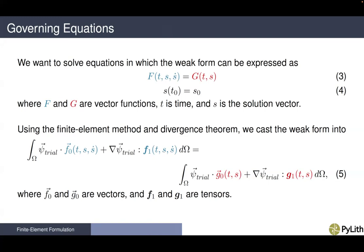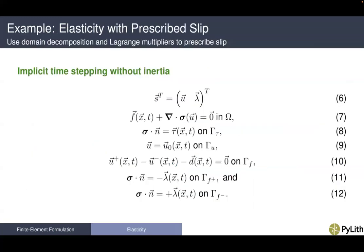Using the finite element method in the divergence form, we cast the weak form into what is shown, where F0 and G0 are vectors and F1 and G1 are tensors. Let's see how this looks for elasticity with prescribed slip, where we're going to use implicit time stepping without inertia. Our solution field has the displacement as well as the Lagrange multiplier corresponding to the change in tractions on the fault. We have our elasticity equation of body forces with the divergence of the stress equal to zero.